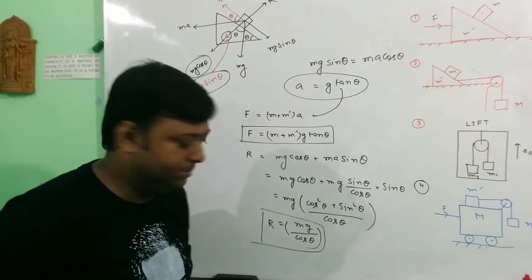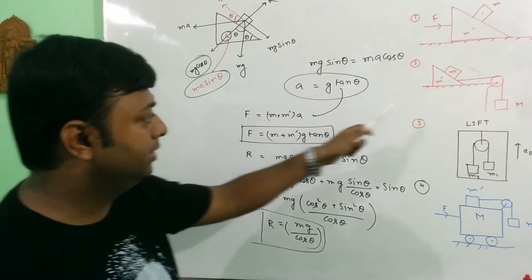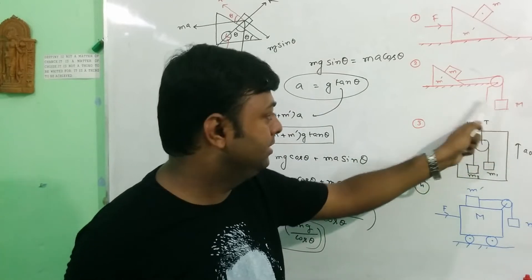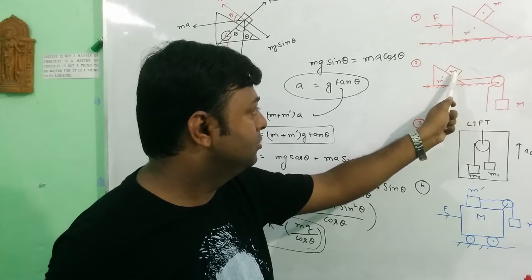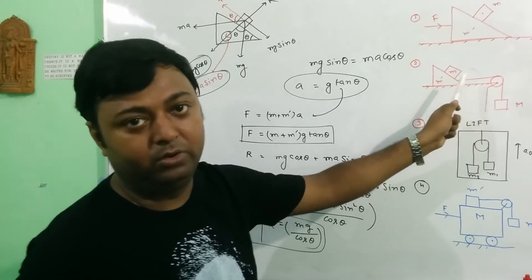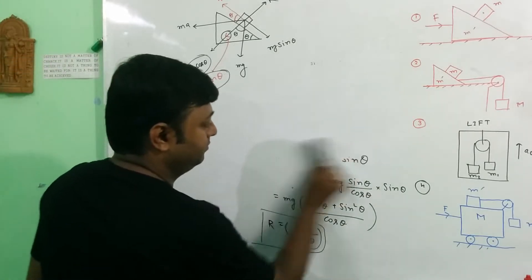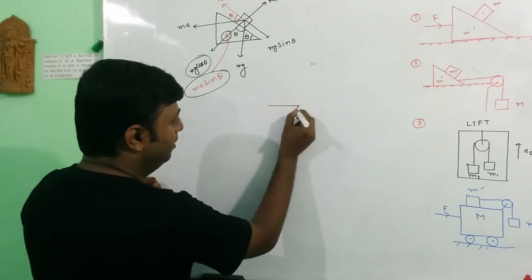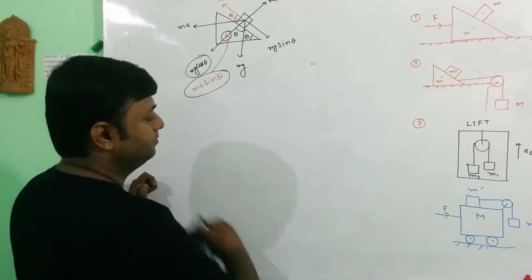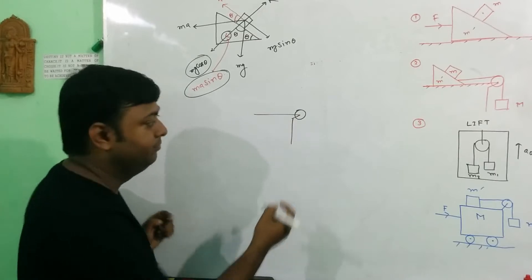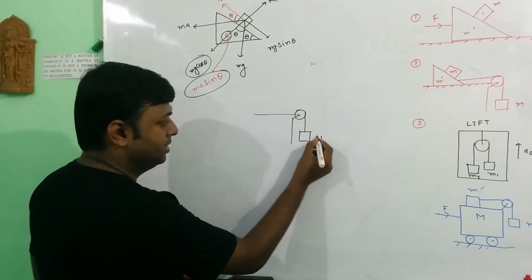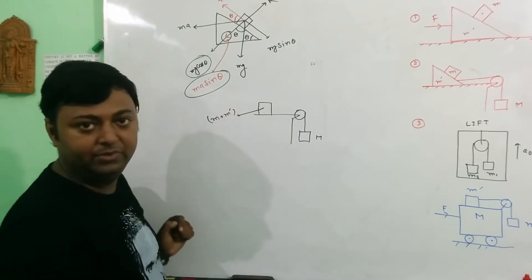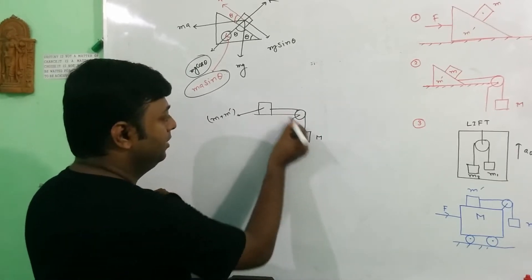Now we solve the second problem. The second problem is similar to the first problem but with the addition of an extra mass. Here we find out the mass M. In this problem we find out the mass M for which the small mass m is not moving in a downward direction. We consider the total mass as M plus m-dash. This extra mass is connected via a pulley.